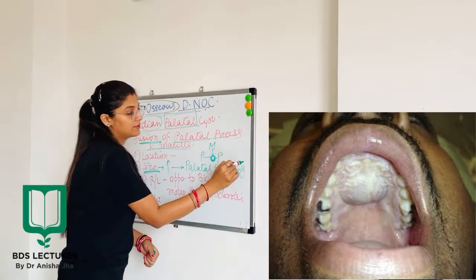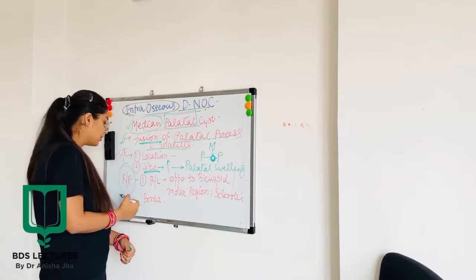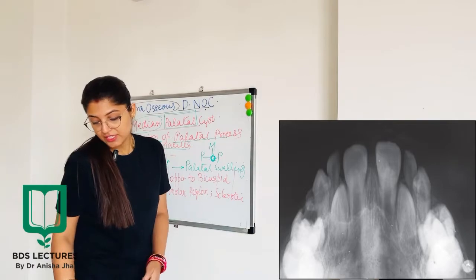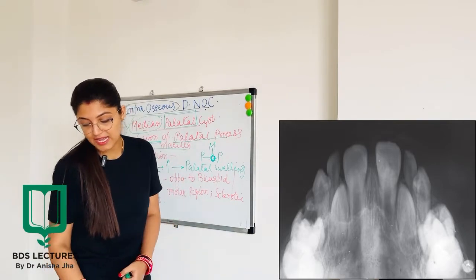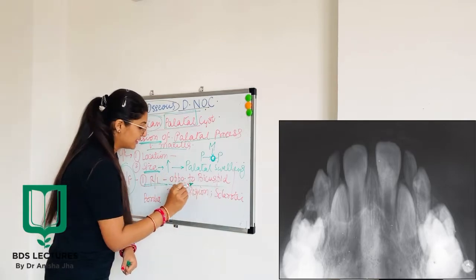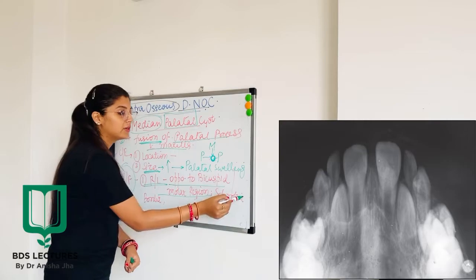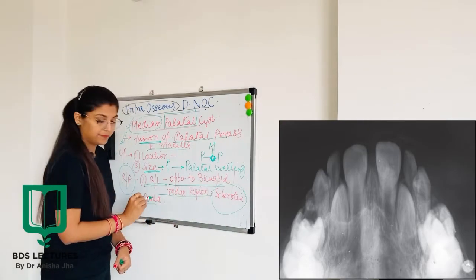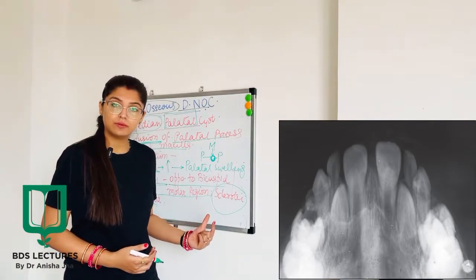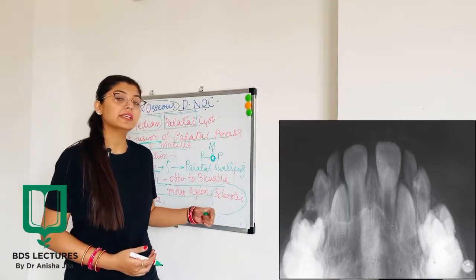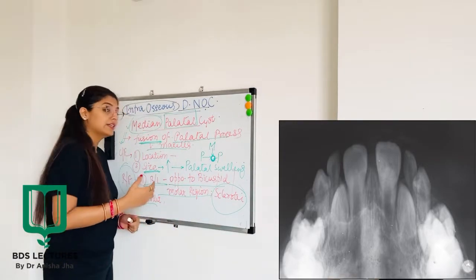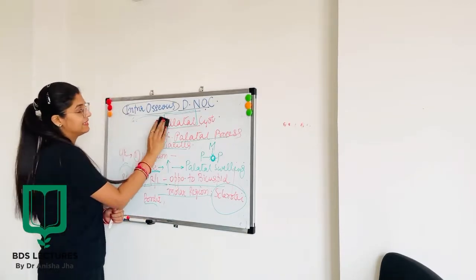Regarding radiological features, on the palatal radiograph it appears as a well-circumscribed radiolucent area opposite to the bicuspid or the molar region. It also has a sclerotic border — there will be a sclerotic layer of bone bordering around the median palatal cyst.